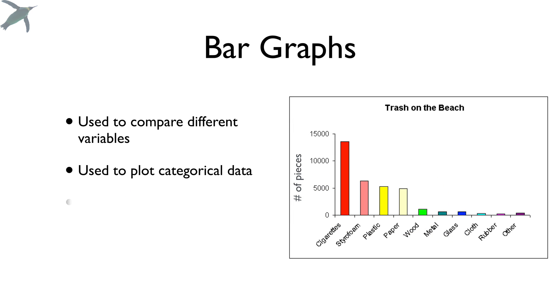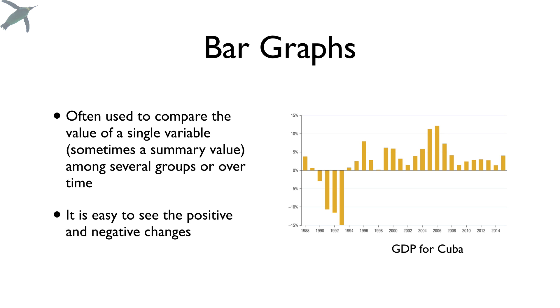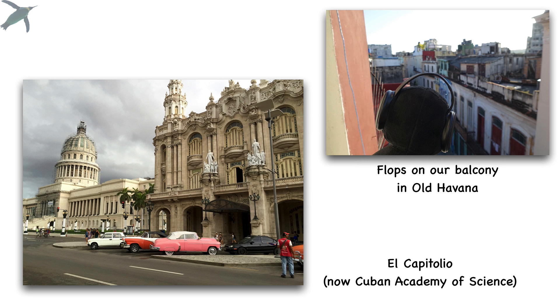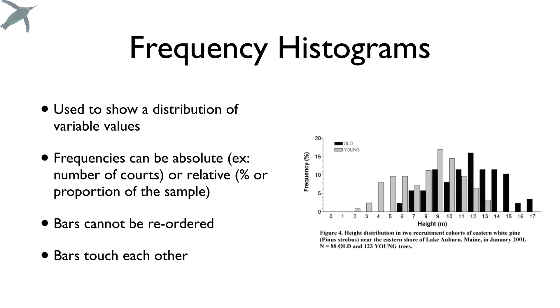Next, we've got bar graphs. Bar graphs are used to compare different variables and categories like this one. You notice that the bars can be reordered and they do not touch each other. Bar graphs are also useful for looking at things like this where you have a single variable or a summary variable like a mean among different groups over time. And here you can see it's really easy to look at positive and negative changes. This is the GDP for Cuba. And by the way, I have to mention we just got back from a project in Cuba and it was an absolutely amazing place.